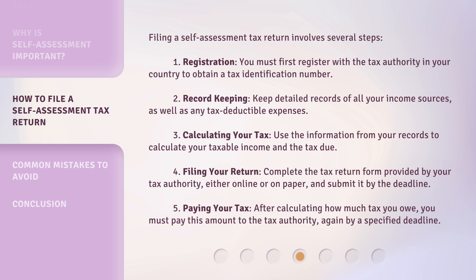Step 2: Record-keeping. Keep detailed records of all your income sources, as well as any tax-deductible expenses. Step 3: Calculating your tax. Use the information from your records to calculate your taxable income and the tax due.